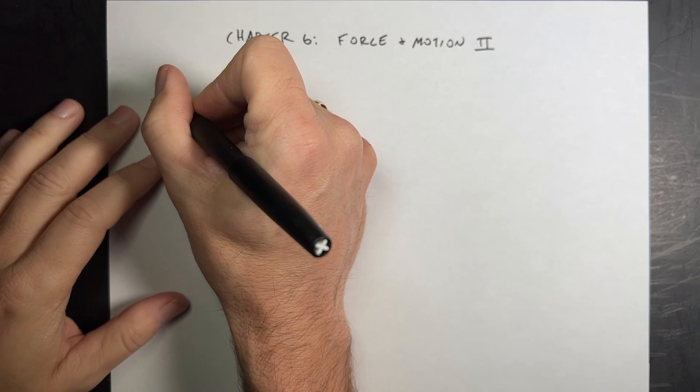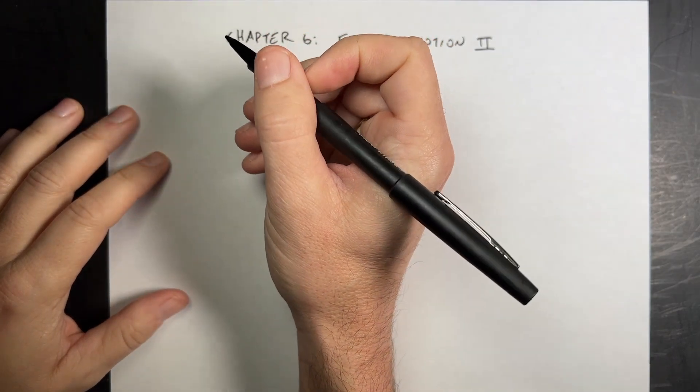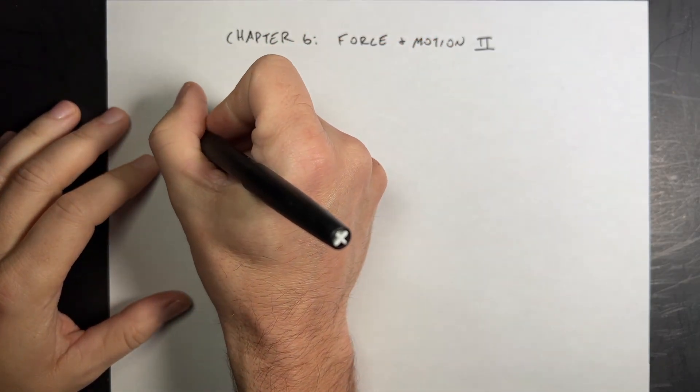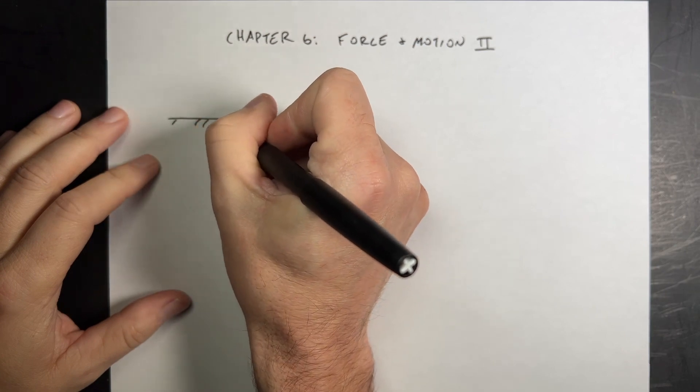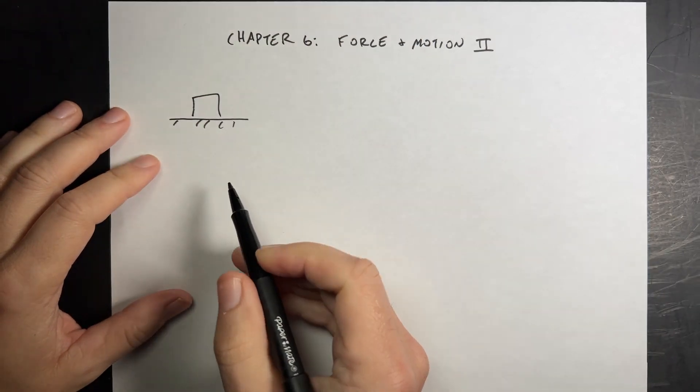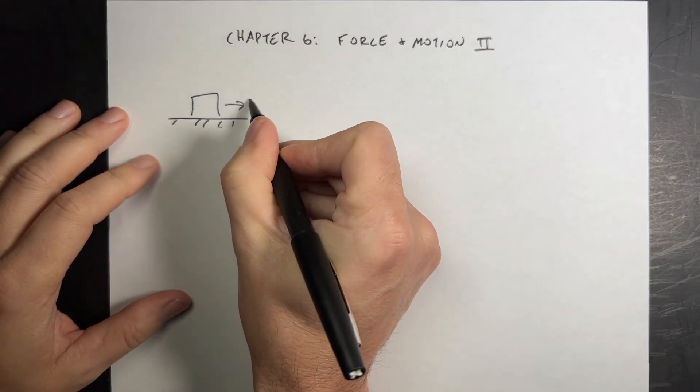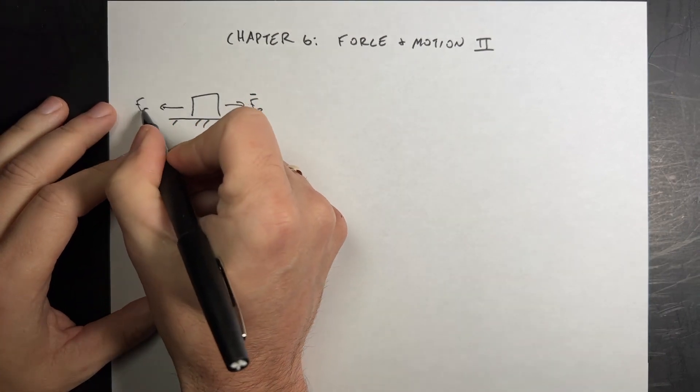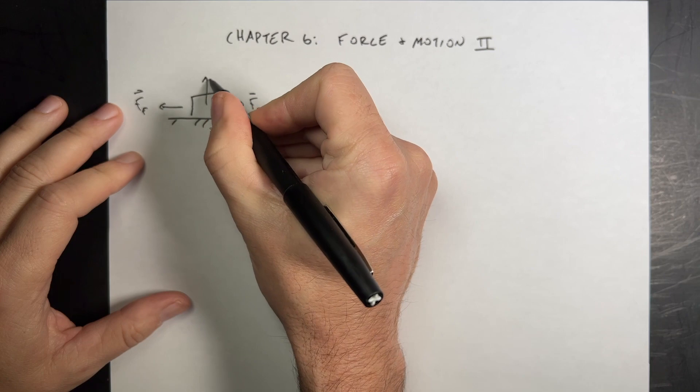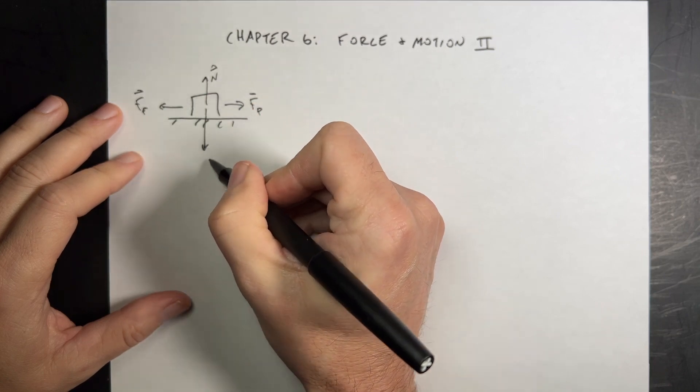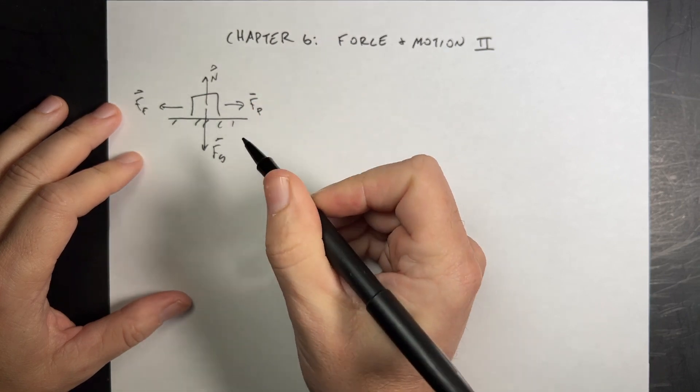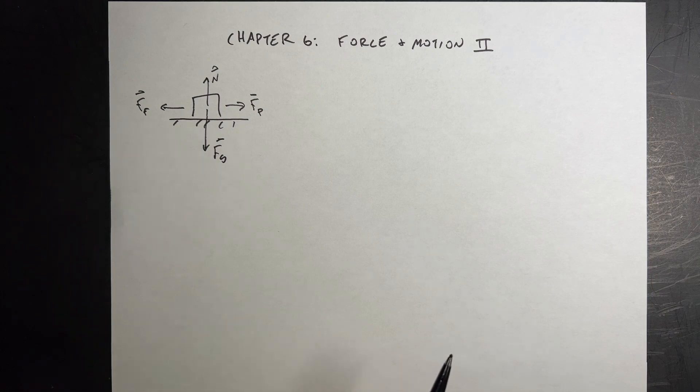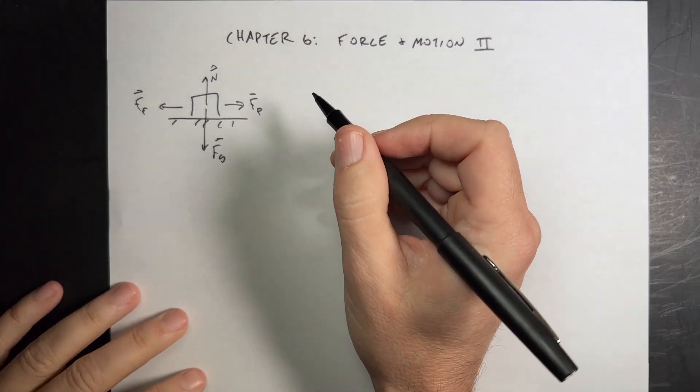So they start off with friction and I actually talked about this in the last example. So if you have a box like that and I push on it with some force FP, then there could be a backwards pushing friction force. Then we have the normal force and then we have the gravitational force like that. And if this is at rest, then those forces have to add up to the zero vector.